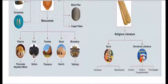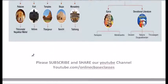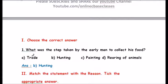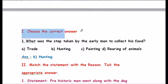Religious literature can be epics or devotional literature. Epics could be the Ramayana and Mahabharata. Devotional literature could be Devaram, Nalaira Devaprabantam, etc.